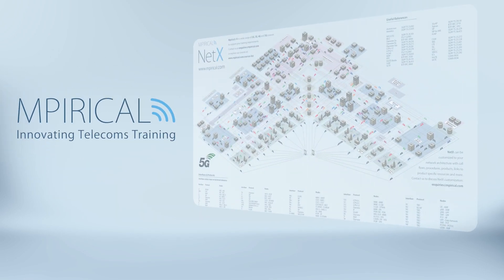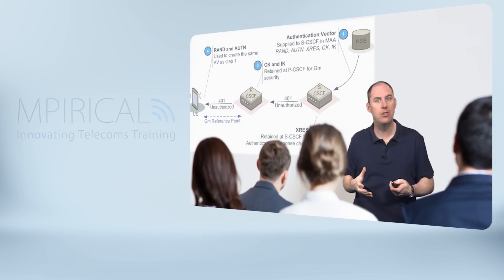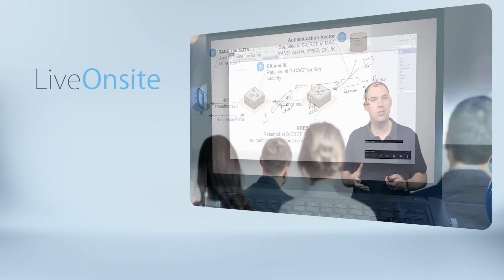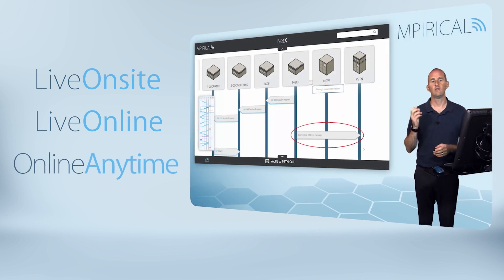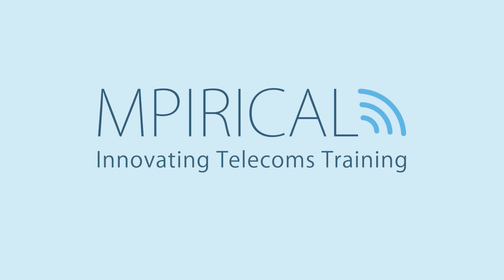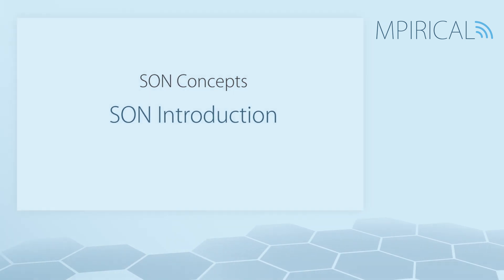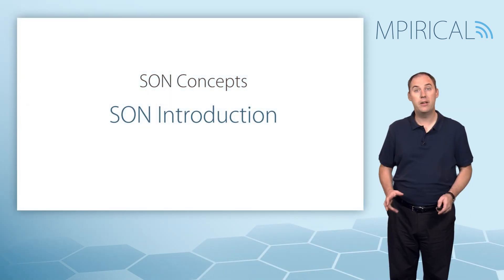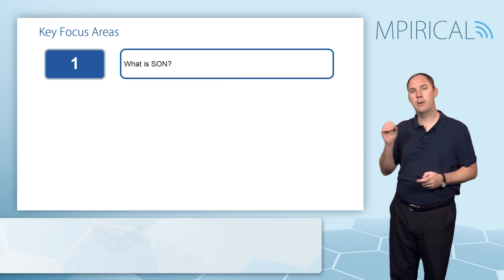Empirical provides compelling interactive learning across a range of delivery options: live on-site, live online, or online anytime. We have a training course that is ideal for you. For a no-obligations chat about your training requirements, contact us at empirical.com. In this video, we're going to introduce SON, or Self-Organizing Networks.